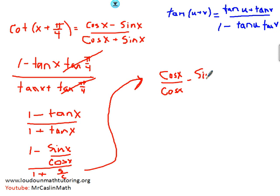minus sine over cosine. And on the bottom, we're going to get something very similar. We're going to get cosine of x over cosine of x plus sine of x over cosine of x.